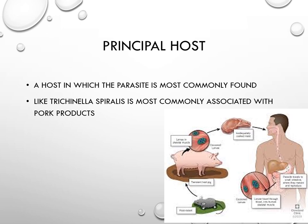Next is the principal host — the host in which the parasite is most commonly found. An example is Trichinella spiralis, most commonly found in pigs and associated with pork products. After eating pork products, human beings become the host. This is the example of the principal host.